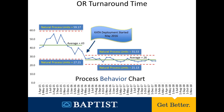On any given month, the process will produce an OR turnaround time anywhere between 31 minutes and 21 minutes. But on the average, it will produce an OR turnaround time of 26 minutes. The process was now predictably aligned to the voice of the customer — a goal of 35 minutes. But eventually, like all goals, this goal changed to 21 minutes.